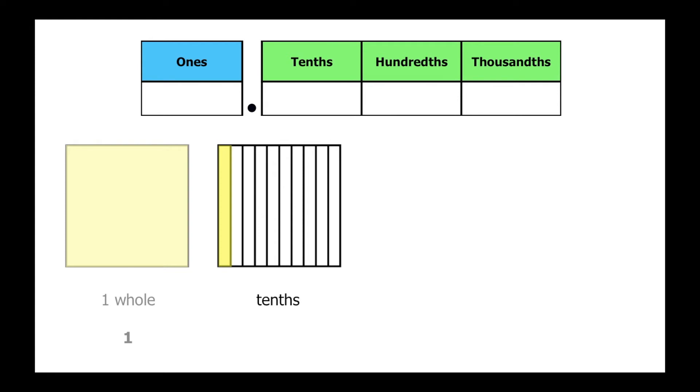Because this is a part and not a whole square, we will place a zero in the ones place to show that it is not a whole. And because this is one part out of 10, we'll place a one in the tenths place. This is one tenth.